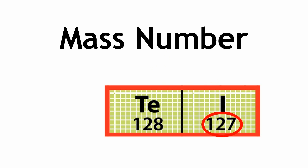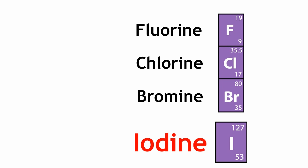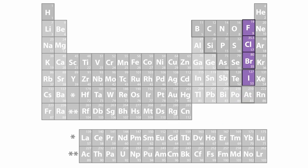Why? Because iodine has a smaller mass than tellurium. But Mendeleev noticed that iodine has similar properties to fluorine, chlorine and bromine, so he broke his own rule and put iodine within this column.